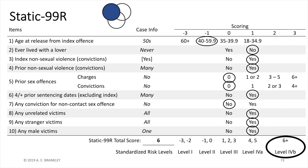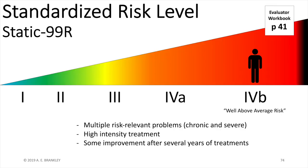Beginning with the Static 99R, we can already start forming a picture of who Mr. Robinson is. He spent most of his life in jail and never really had a chance to form intimate relationships. The static's criminal history items tell a story of a person with relatively more general criminality problems. He did have a boy victim, indicating a potential attraction to children. Overall, Mr. Robinson received a score of 6 on Static 99R, preliminarily placing him at level 4B. Individuals at level 4B are expected to have multiple problems and require intensive treatment over long periods of time before any improvement is observed.